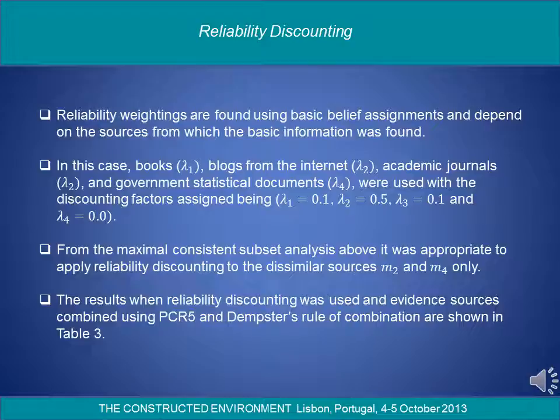Reliability discounting: Reliability ratings are found using basic belief assignments and depend on the sources from which the basic information was found. In this case, books (λ1), blogs from the internet (λ2), academic journals (λ3), and government statistical documents (λ4) were used, with the discounting factors assigned being λ1=0.1, λ2=0.5, λ3=0.1, and λ4=0.0. From the maximal consistent subset analysis, it was appropriate to apply reliability discounting to the dissimilar sources M2 and M4 only. The results when reliability discounting was used and evidence sources combined using PCR5 and Dempster's rule of combination are shown in Table 3.